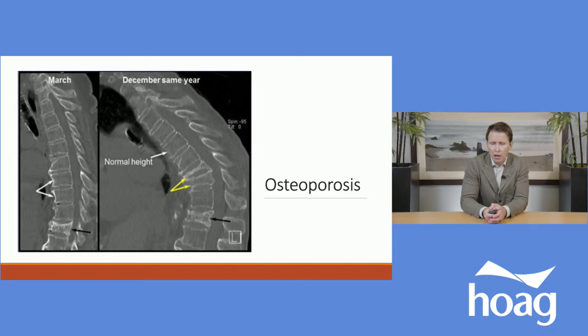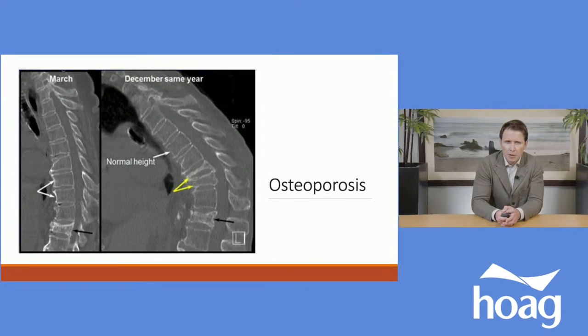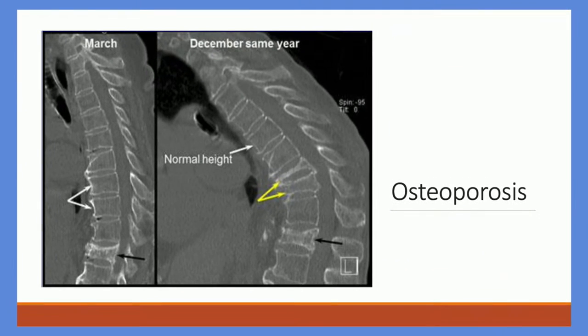Osteoporosis is a very common cause of deformity. Here is a patient who already has a compression fracture at the base of the thoracic spine, and a picture taken nine months later shows further progression of deformity due to new fractures in the mid-thoracic region.